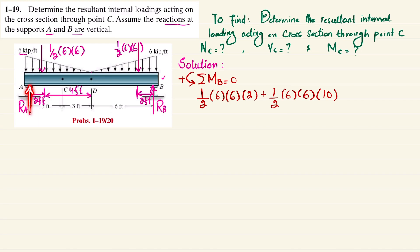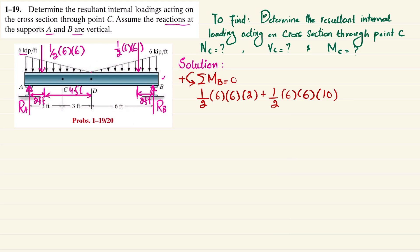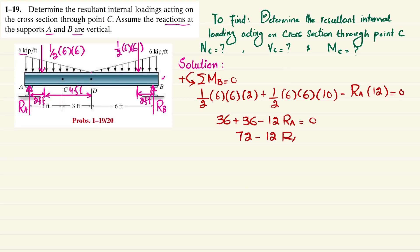The third moment is due to RA with perpendicular distance 12 feet, producing a clockwise moment, so it is negative: minus RA times 12 equals zero. This gives 36 plus 36 minus 12·RA equals zero, so 72 minus 12·RA equals zero, and RA equals 72 divided by 12.